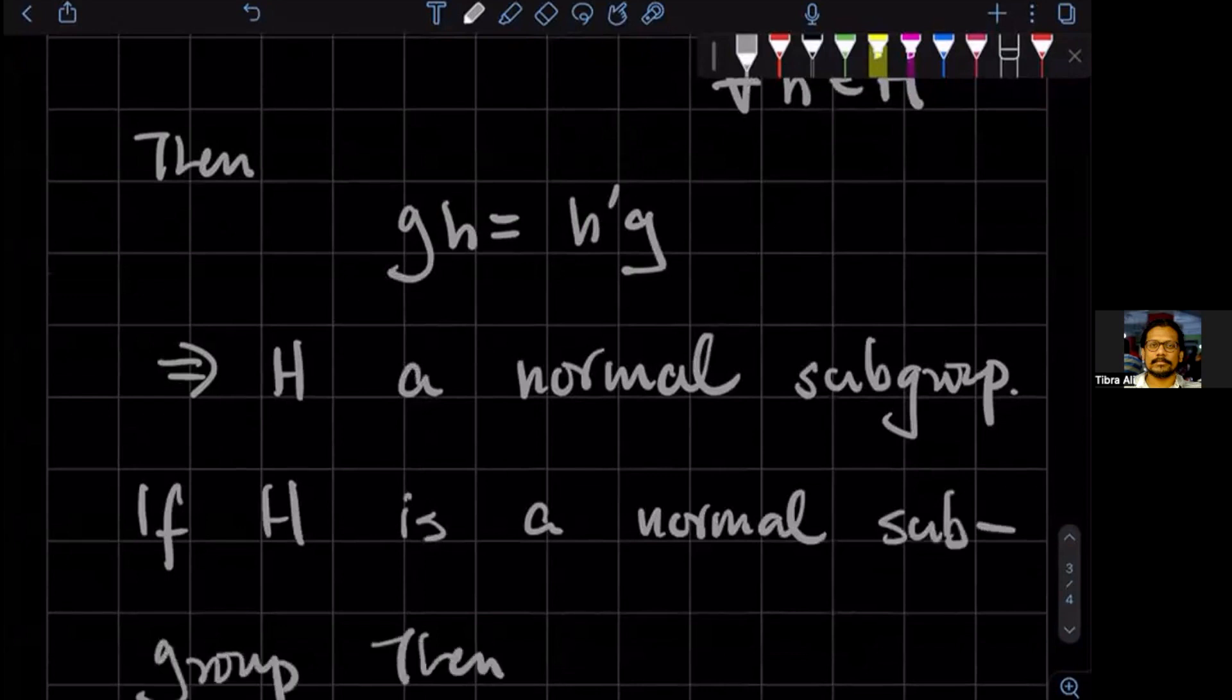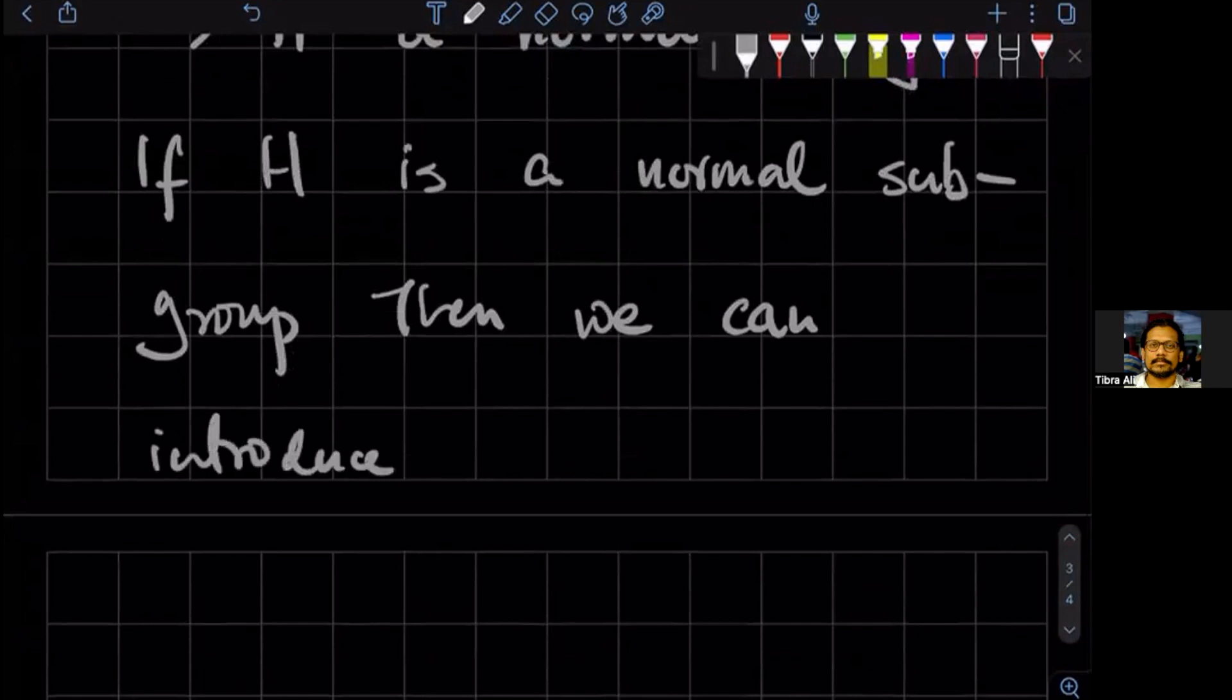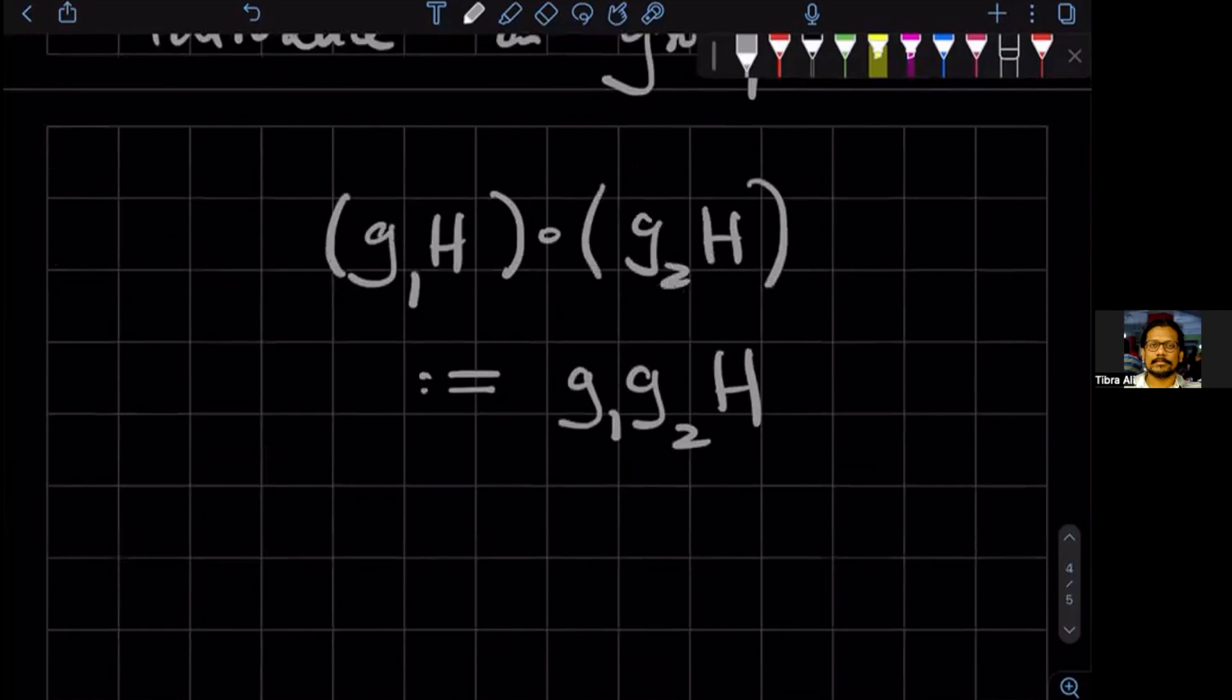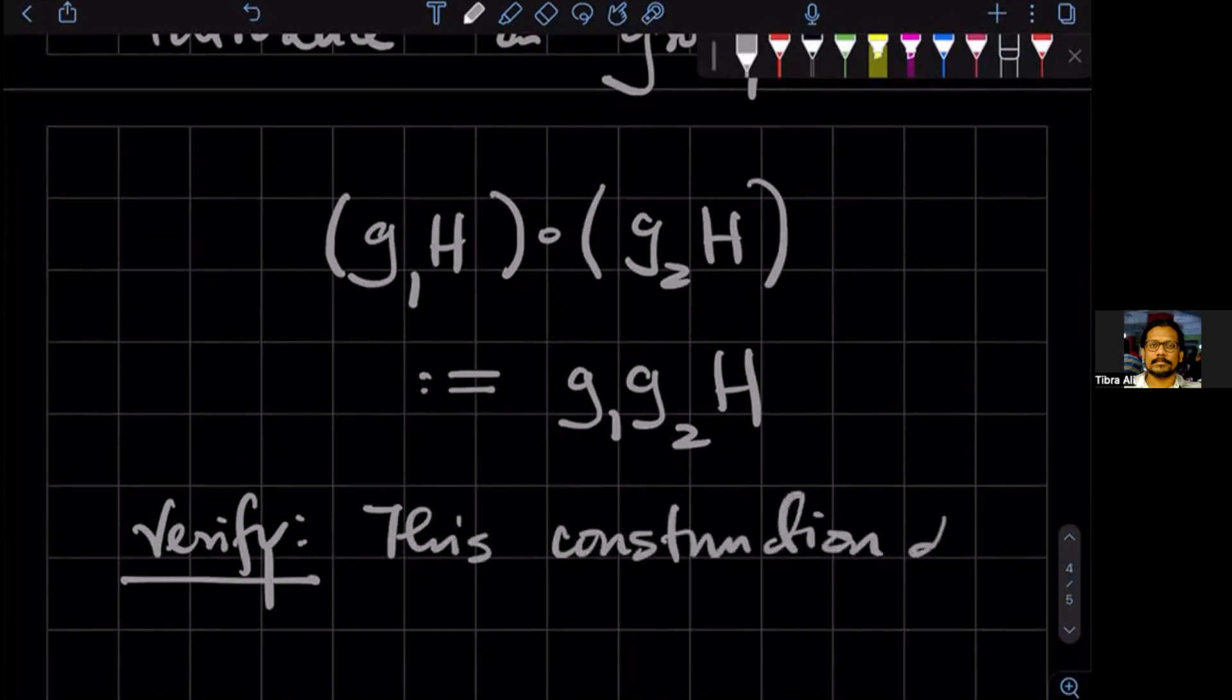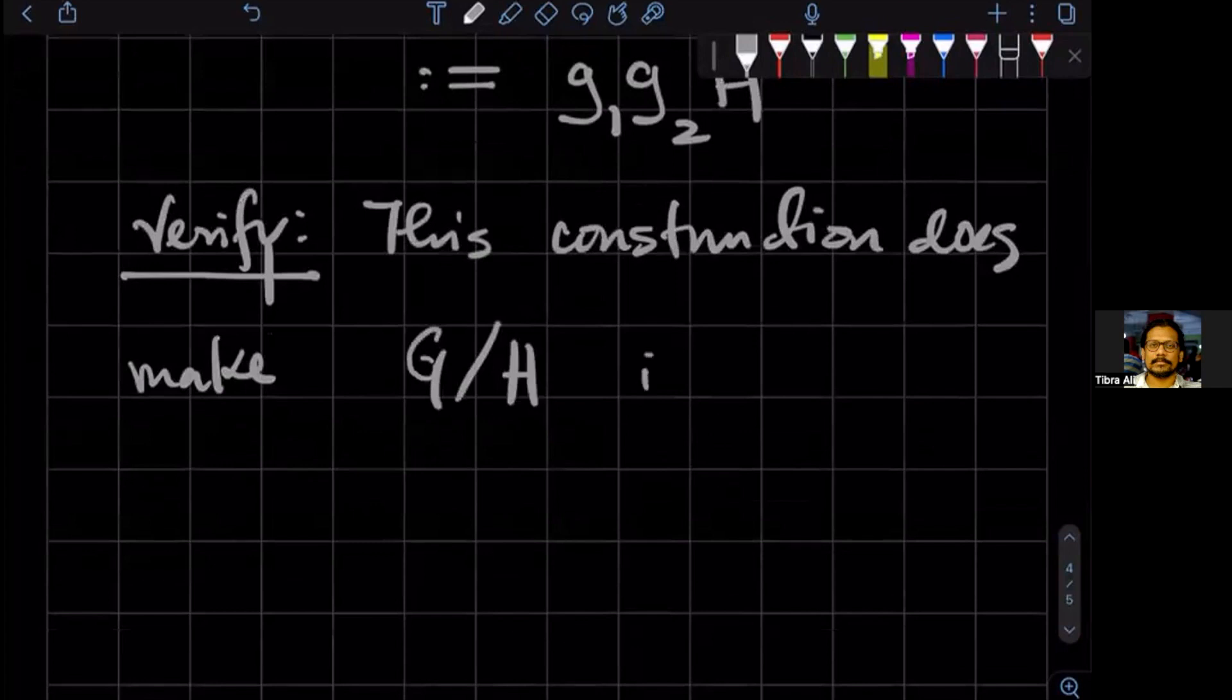If H is a normal subgroup, then we can introduce a group multiplication, a very natural group multiplication, where we take two cosets, g1 H and say g2 H, and define the multiplication between them as being the coset that results from g1 g2 of H. And you can verify, and I think this is one of the exercises that I gave, that this construction does make G over H into a group.